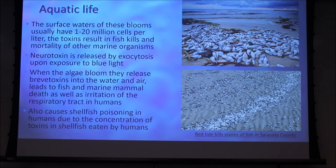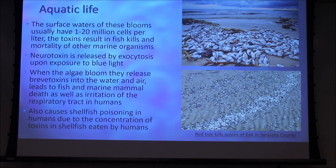The neurotoxin is released by exocytosis upon exposure to blue light. When the algae bloom, they release brevetoxins into the water and the air. This leads to fish and marine mammal death, as well as irritation of the respiratory tract in humans. If you're on a beach during these red tides, you can actually experience symptoms of asthma or bronchitis. It also causes shellfish poisoning in humans due to concentrations of toxins in shellfish eaten from red tide locations.